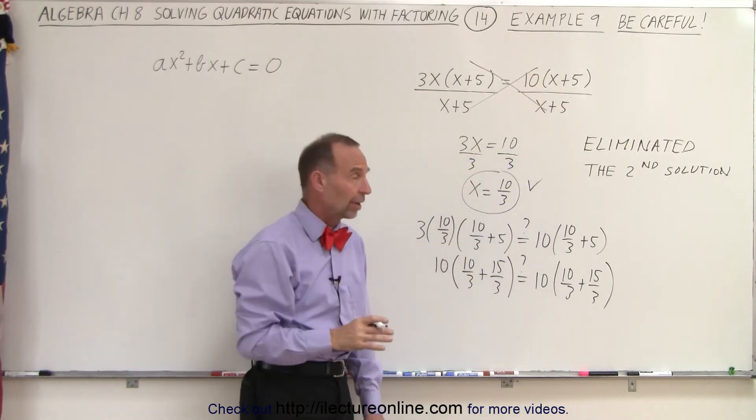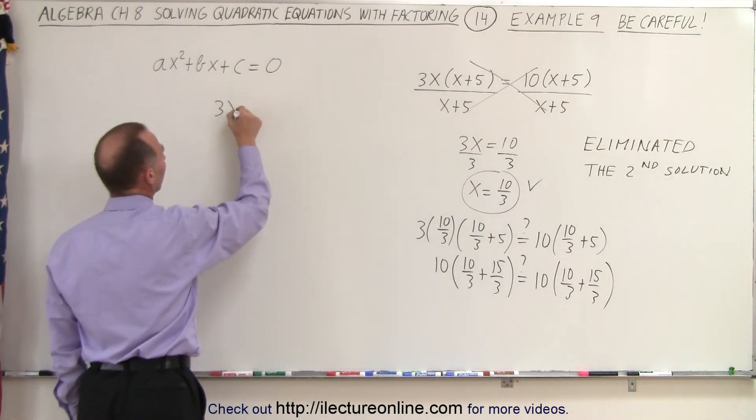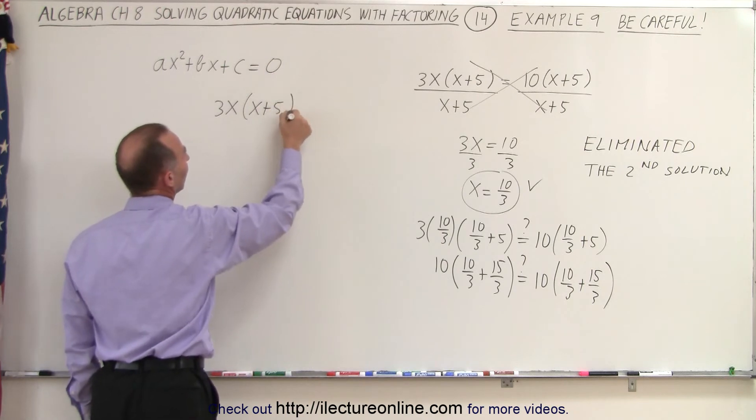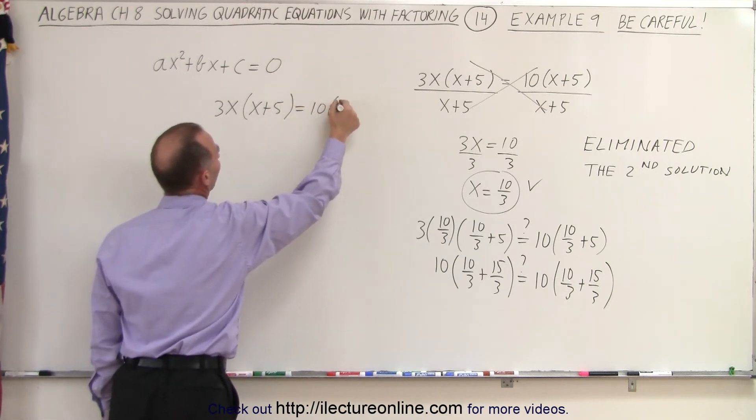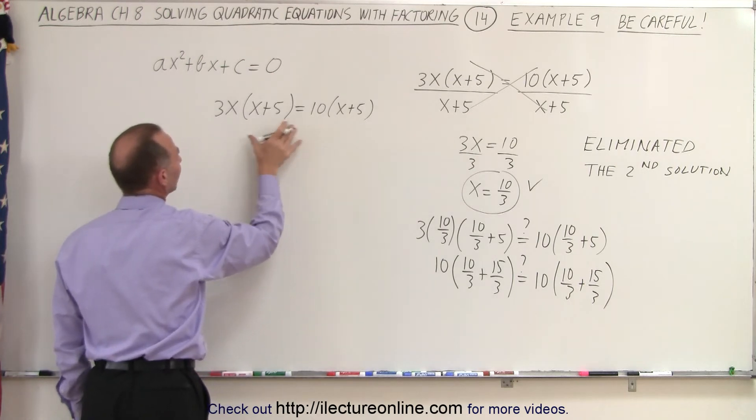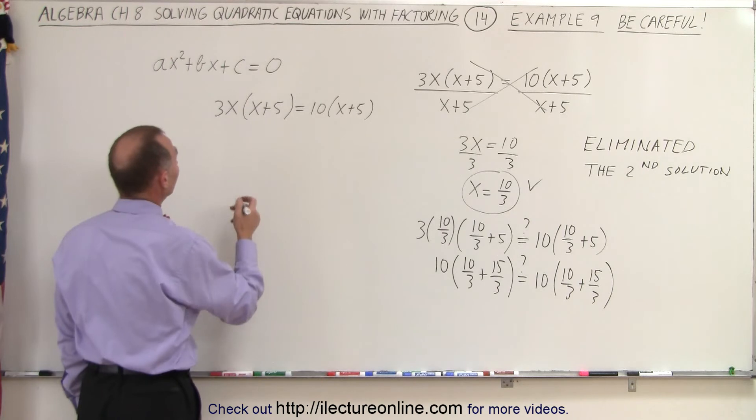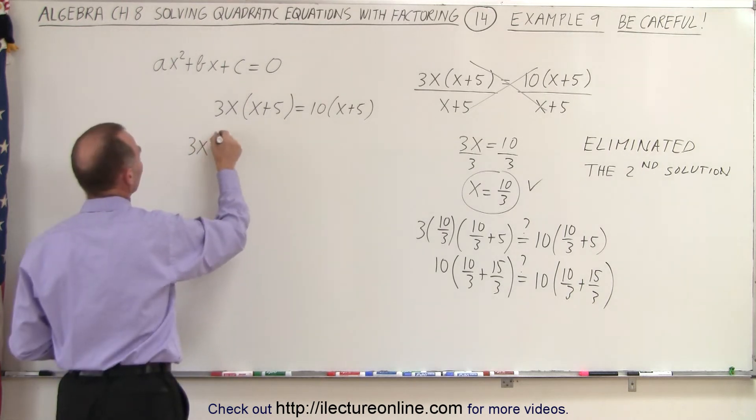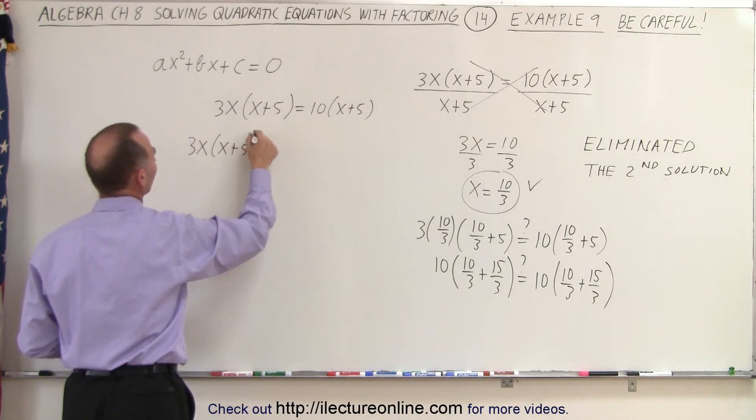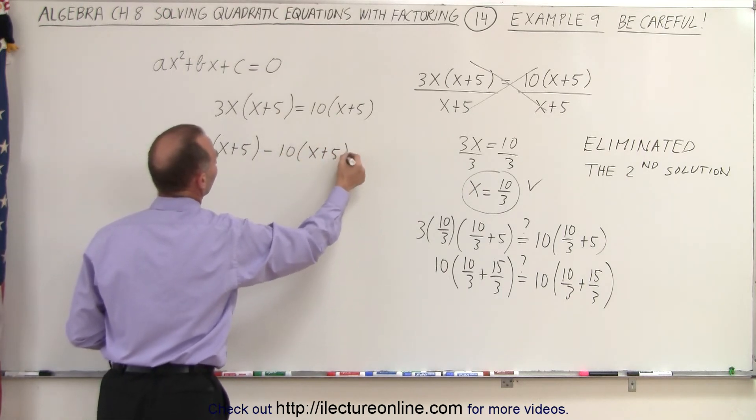Instead let's try this. So here we'll rewrite the problem. 3x times x plus 5 is equal to 10 times x plus 5. And instead we're going to move the left side to the right side or the right side to the left side. It doesn't really matter. So we can do that. 3x times x plus 5 minus 10 times x plus 5 equal to 0.